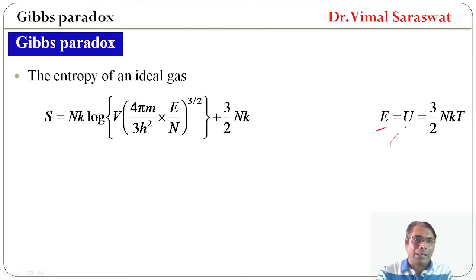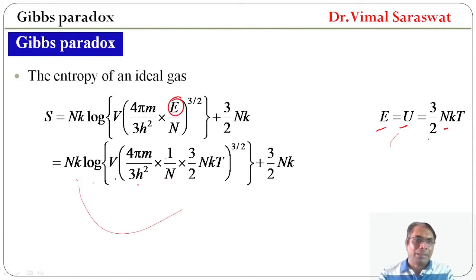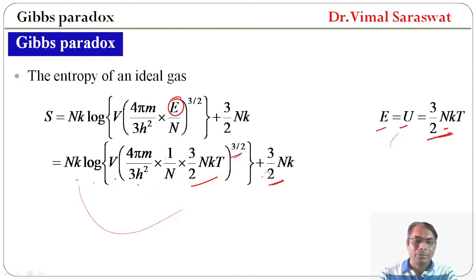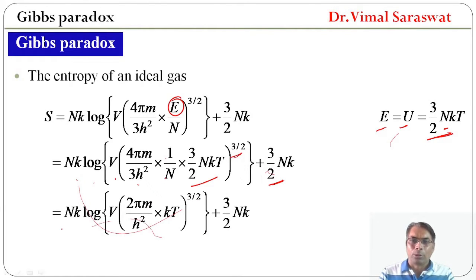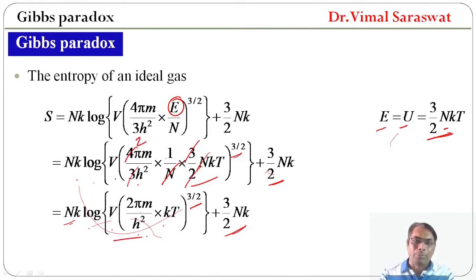Now, internal energy U = (3/2)NKT. So, S = NK log(V · (4Mπ / 3H²) · (1/N) · (3/2·NKT)^(3/2)) + (3/2)NK, which simplifies to S = NK log(V · (2Mπ / H²) · (KT)^(3/2)) + (3/2)NK, because the N terms cancel, the 3s cancel, and 2 cancels with 4.